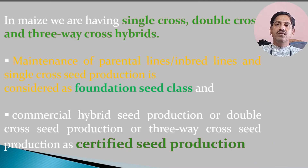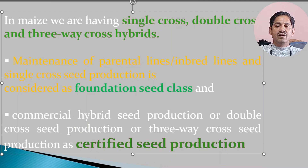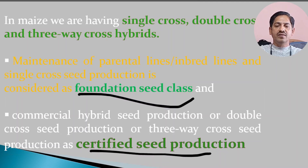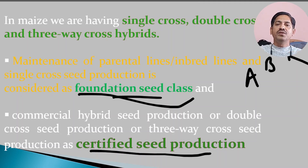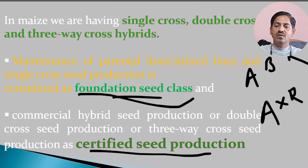In maize, single cross, double cross, and three-way cross hybrids are available. When you are multiplying the A line, B line, and R line — these three parental lines — they come under the foundation seed maintenance program. When you make a cross between these lines, for example A into R, the resulting seed comes under hybrid seed or certified seed. Keep this in mind.